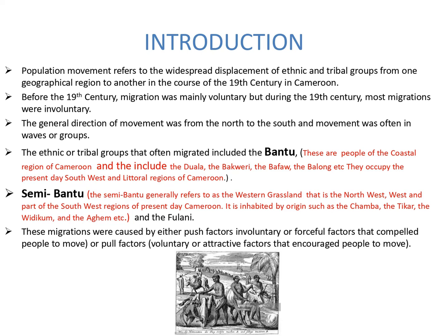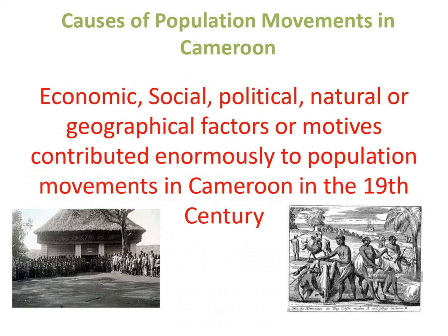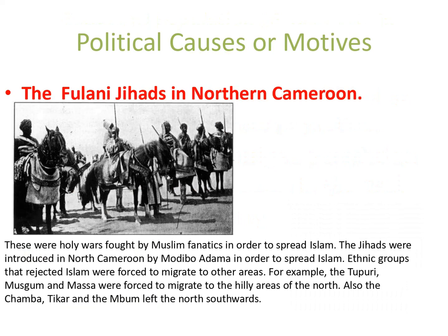The ethnic or tribal groups that often migrated include the Bantu — people of the coastal region of Cameroon, including the Duala, Bakweri, Bafo, and Balong, who occupy the present-day Southwest and Littoral regions. The Semi-Bantu generally refer to the western grasslands, that is the Northwest, West, and part of the Southwest region, inhabited by groups such as the Chamba, the Tikkas, the Nkum, and the Anyang — and the Fulani.